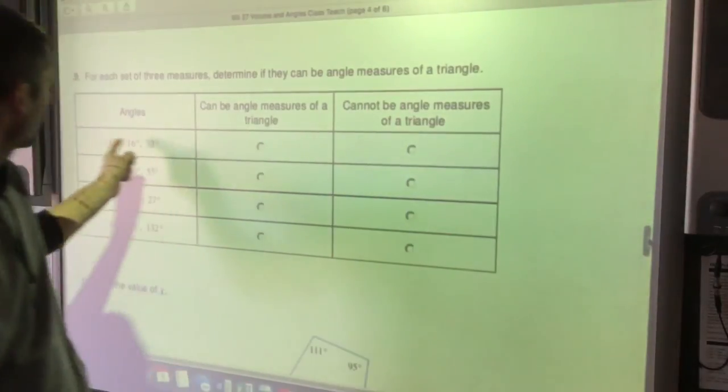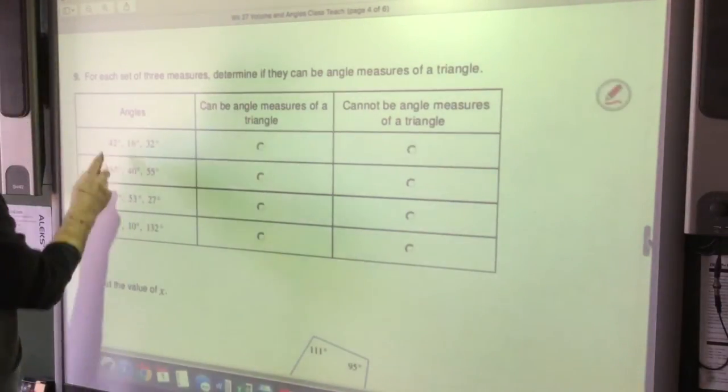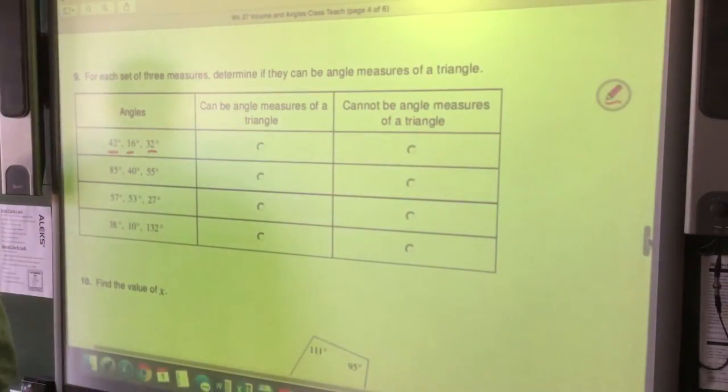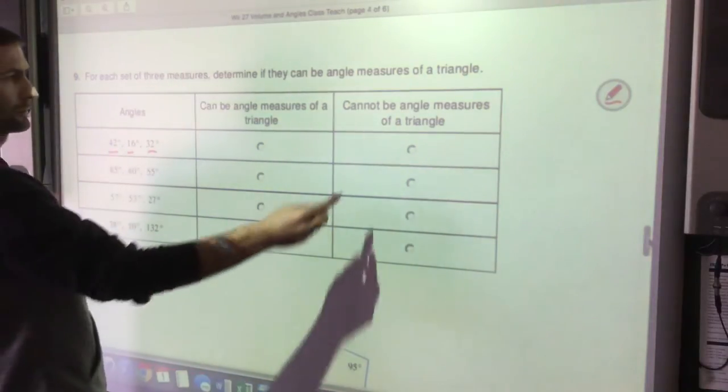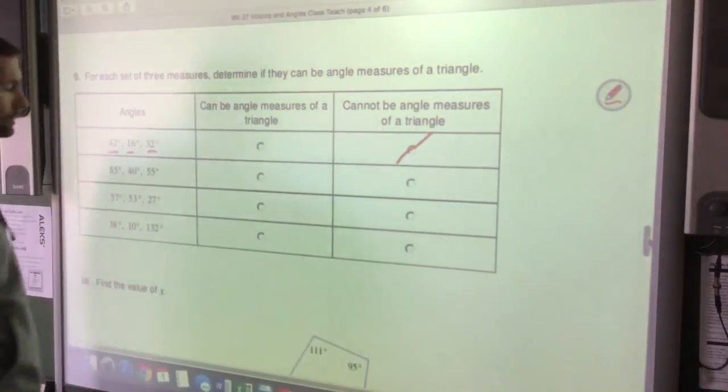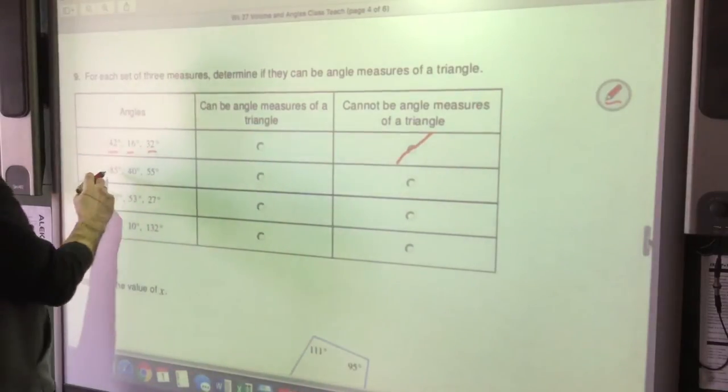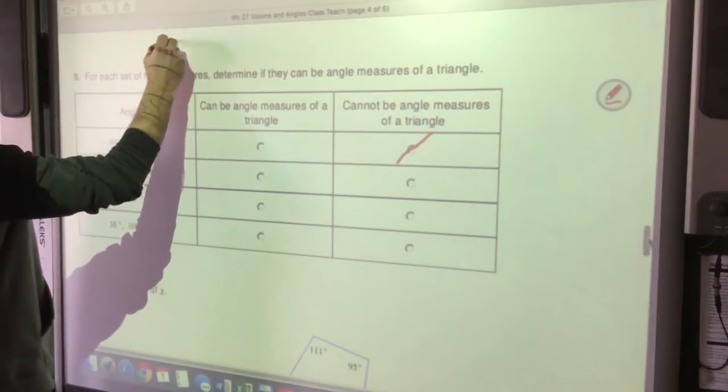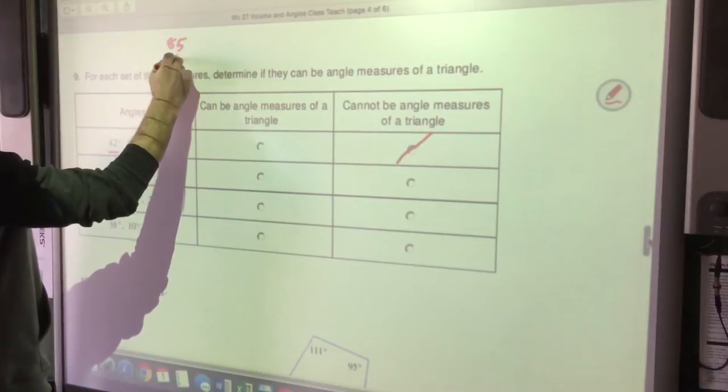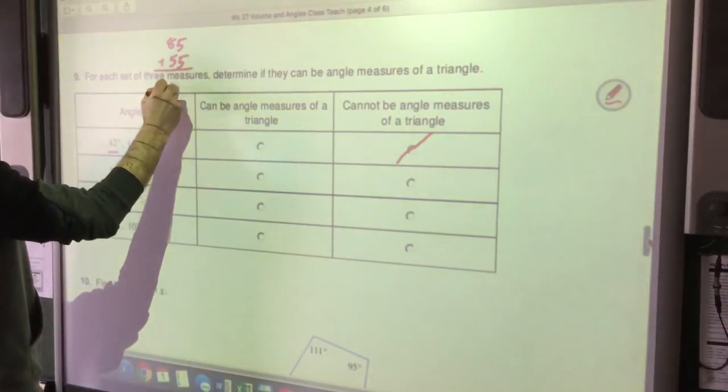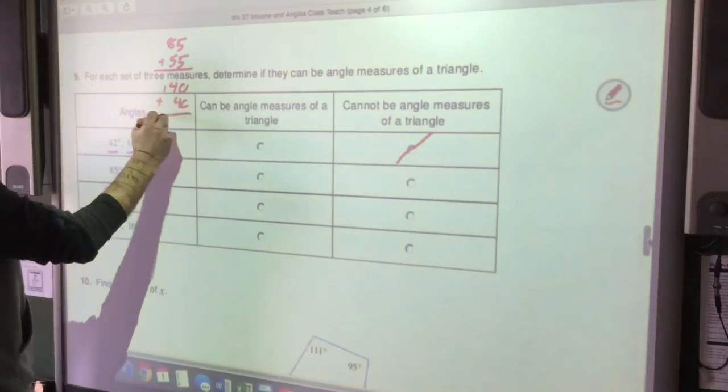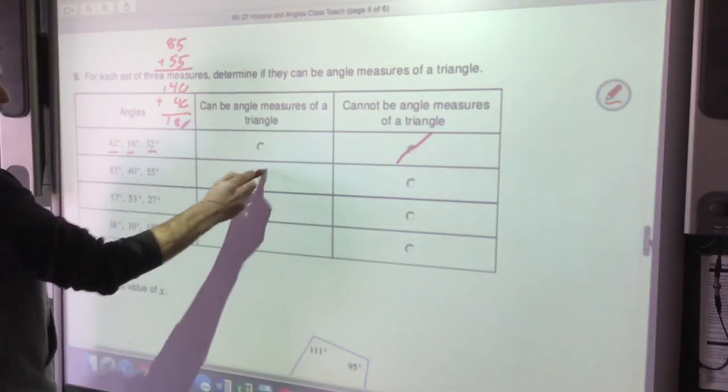So for this one then, let's see which of these are triangles. That plus that plus that, that's not even close to 180, that's way less. So that cannot be angle measures of a triangle. That plus that plus that, that looks about 180. Let's add them up and see. 85 plus 55 is 140 plus another 40. Yeah, that's 180. That's a triangle.